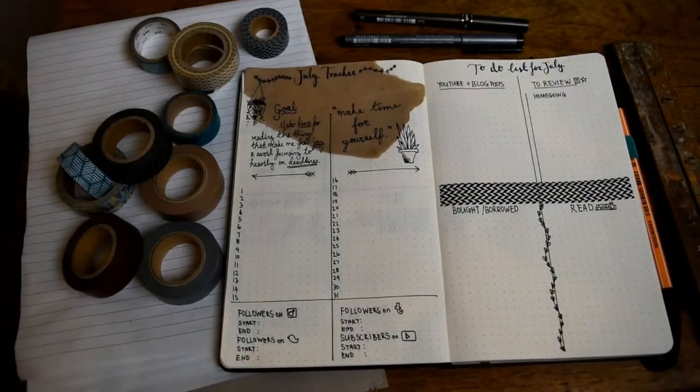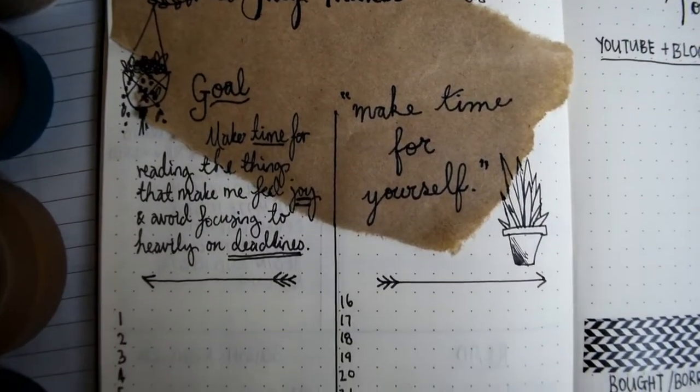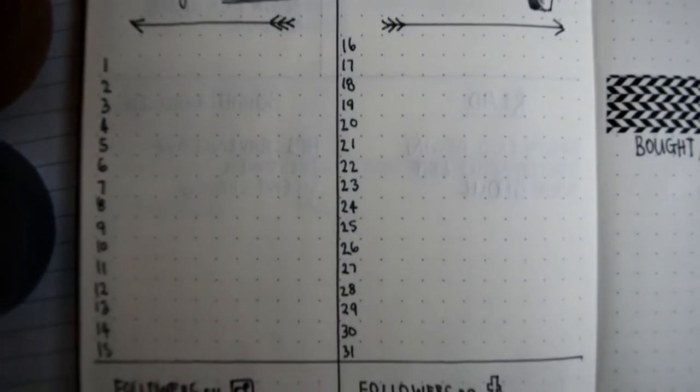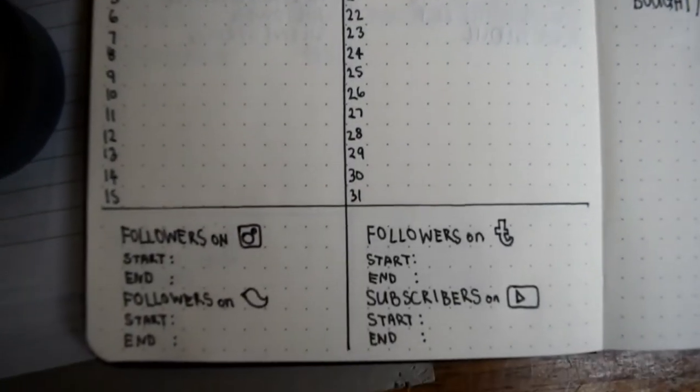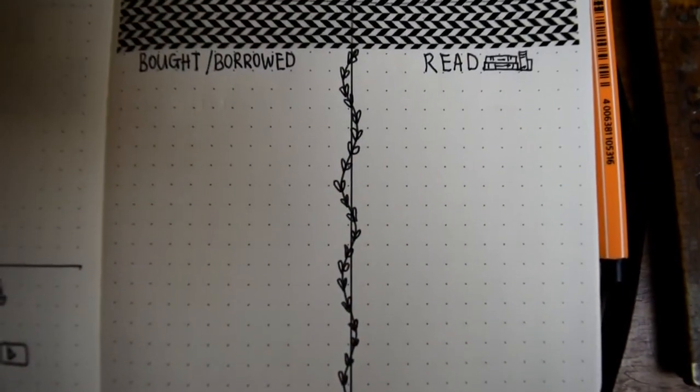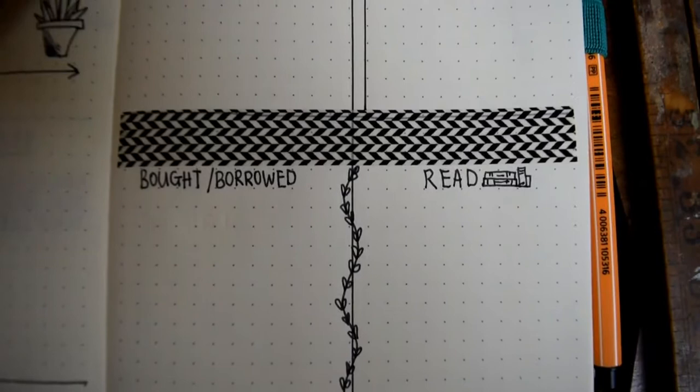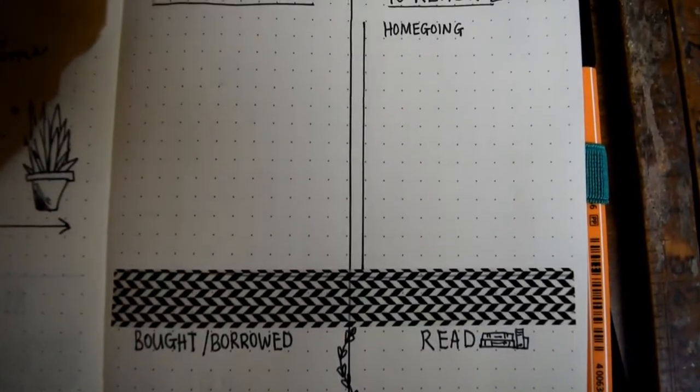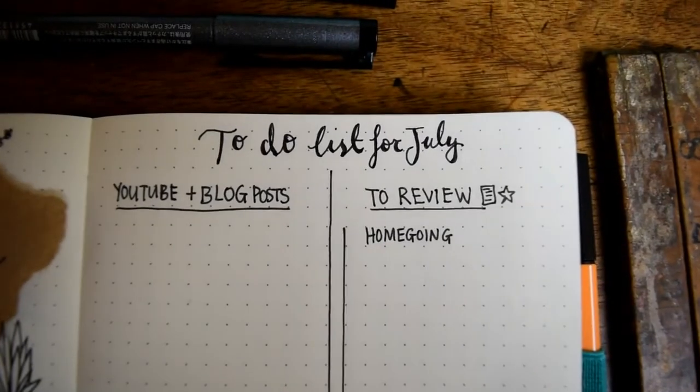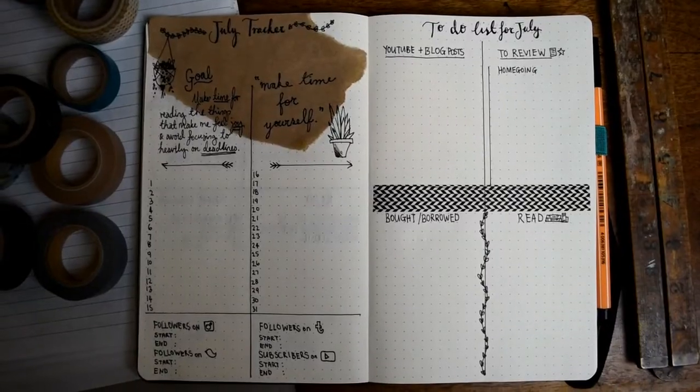So this is the spread. This is the left-hand page of my journal which includes my goals, space for all of my monthly posts and space for all of my daily posts this month, and my statistics tracker. This is my right-hand page which is the to-do list with all of its different sections: the read, borrowed and bought, to review, and the YouTube and blog posts.